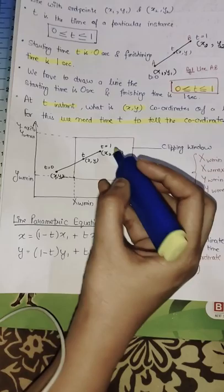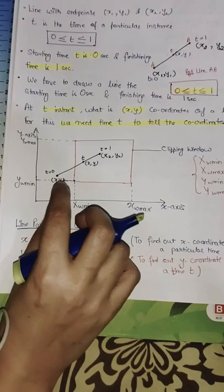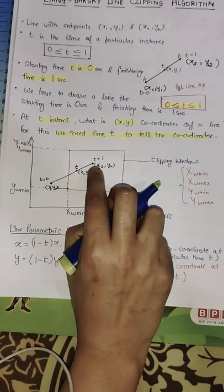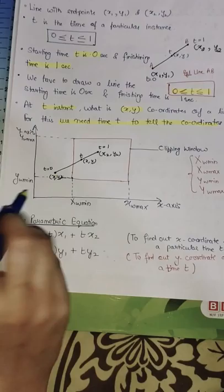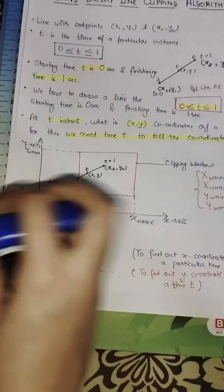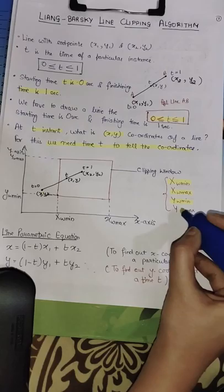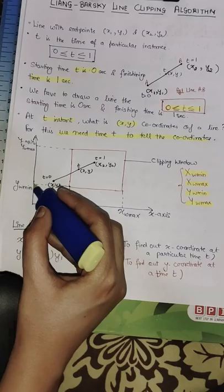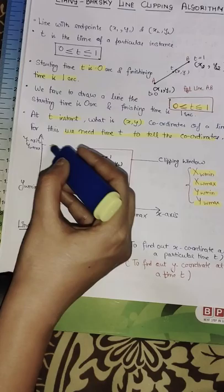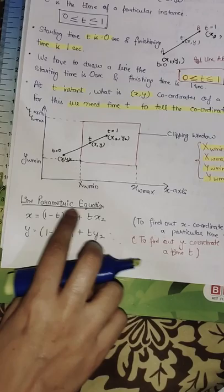A line is passing through the clipping window. The line may be completely inside the clipping window, completely outside, or partially inside and partially outside. We need to find out whether the point at parameter T is inside or outside the clipping window. For any clipping window, we know 4 boundary values: Xw_minimum, Xw_maximum, Yw_minimum, and Yw_maximum. These coordinates tell us the minimum and maximum X and Y values of the window.